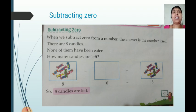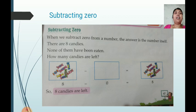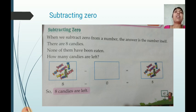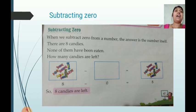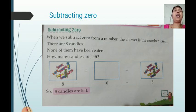Now we move to our next concept: subtracting zero. When we subtract 0 from a number, the answer is the number itself. For example, there are 8 candies and none of them have been eaten — that means 0 candies were removed. So 8 minus 0 equals 8. All 8 candies remain because when we subtract 0 from any number, the answer is the number itself.